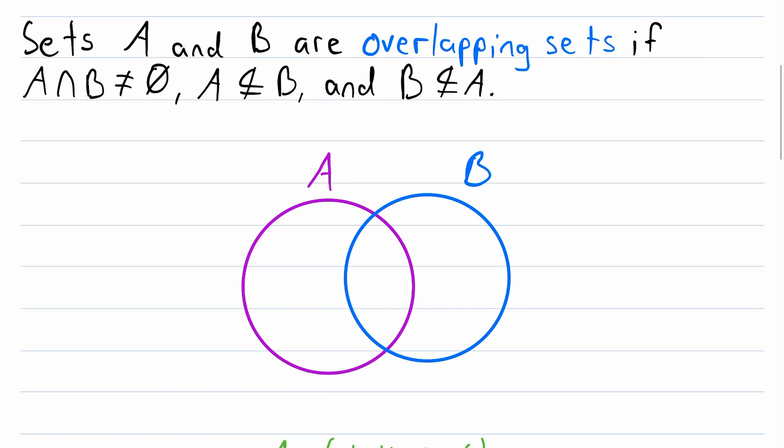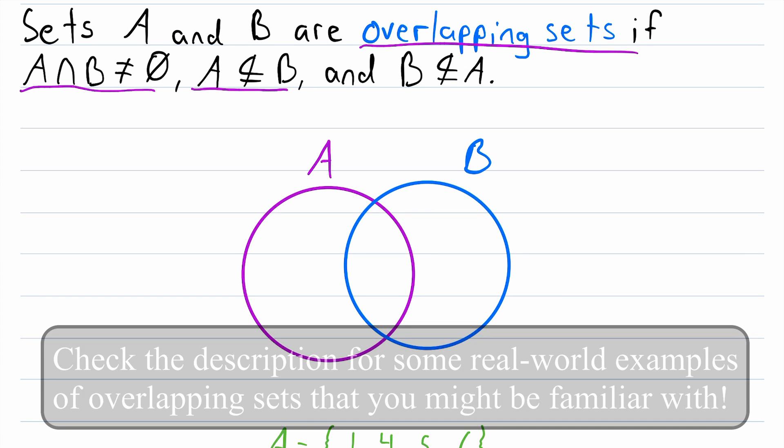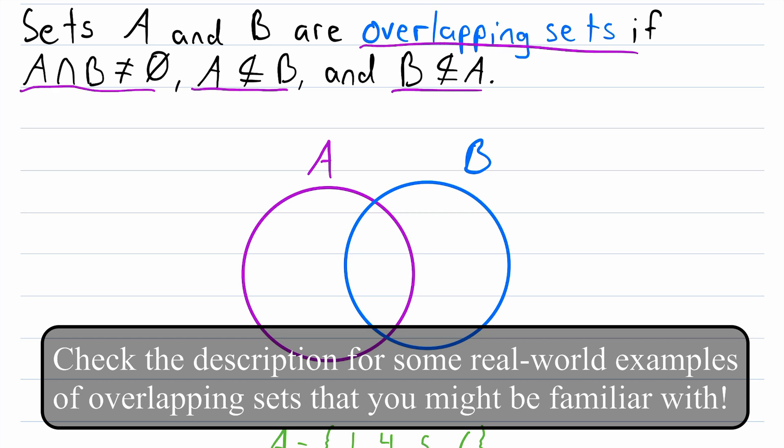So one last time, two sets, A and B, are overlapping sets if their intersection is non-empty, and they are not subsets of each other. I hope this video helped you understand what overlapping sets are.